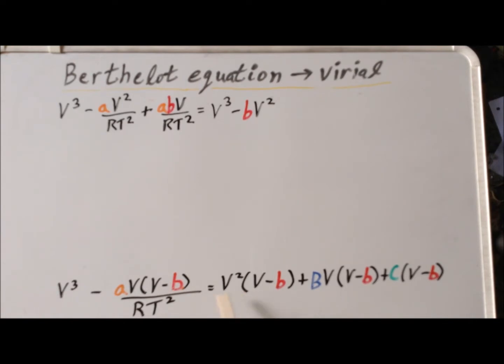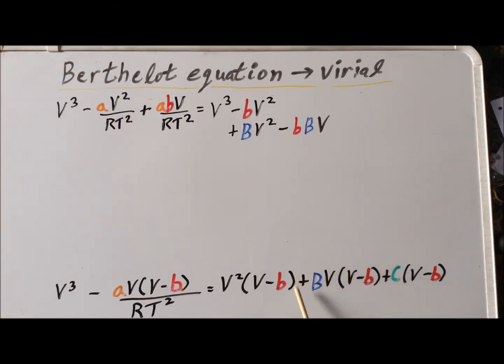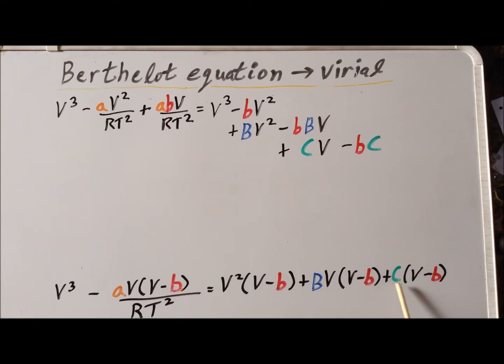Applying the distributive law here gives us V cubed minus BV squared. Multiplying out these terms gives us big B, V squared minus little b, big B, big B, V. And we see here precisely why we've written the little B and the big B in different colors to avoid confusion. Then for our final term, we end up getting CV minus little B times C. And notice that we've lined up the relevant powers of V to make simplification simpler in the next step.